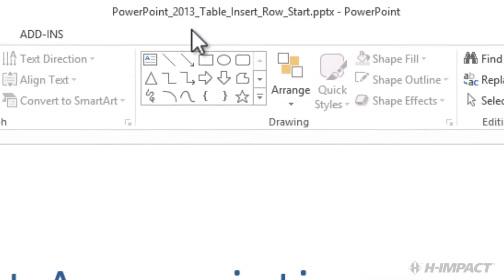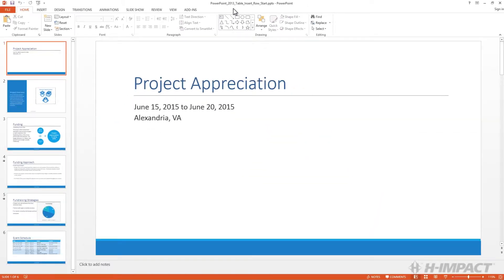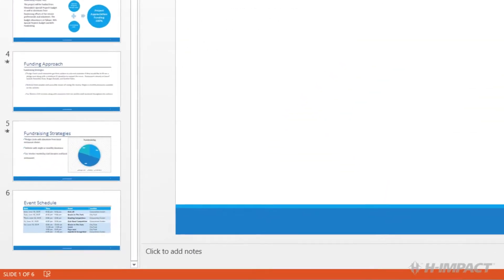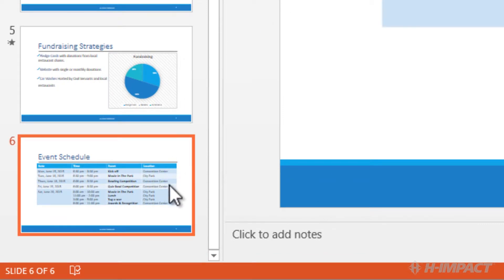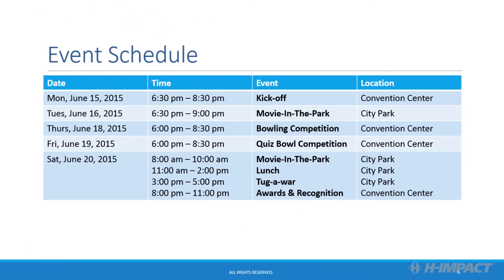We need to insert a row in the table on slide 6. Click slide 6 in the navigation pane. Place the cursor in the first cell of the row labeled Tuesday, June 16th.